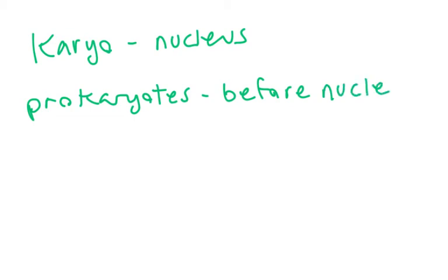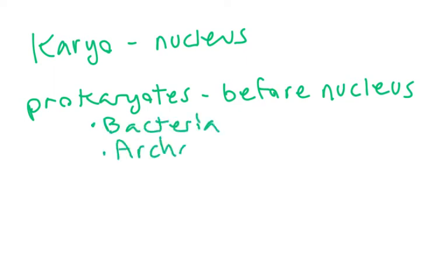Prokaryotes have two categories: there are bacteria and there are archaea. These evolved before the nucleus evolved. You're going to see bacteria a lot more than archaea, because archaea tend to be rare in our studies and they also tend to live in extreme environments, though not always.